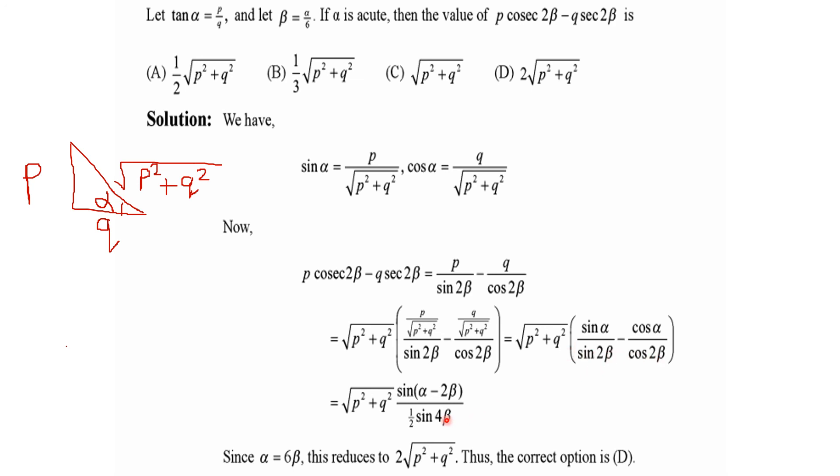Then we place it as sin 4β. And α = 6β, so it will cancel. And here we will have the final answer. So in this way we solve it.